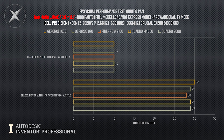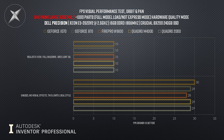Here are the results for the large assembly — with visual styles on and visual styles off. With visual styles on, every single card on the bench produced the exact same output: 10 frames per second, regardless of the graphics card installed. With visual styles off, there was a little variance between 28 and 30 frames per second, but given the nature of monitoring FPS in a CAD application, that's within reasonable tolerance. Pretty much no difference between any of the cards on the large assembly.